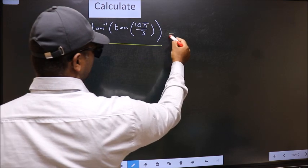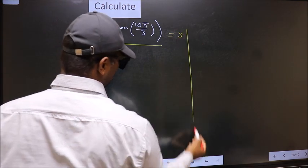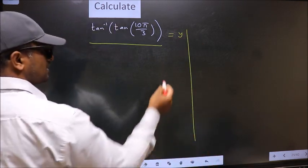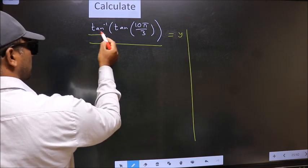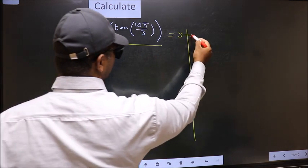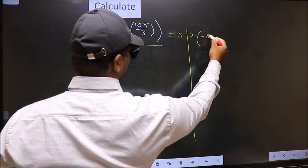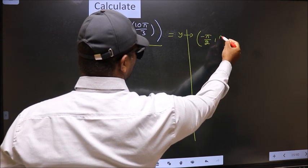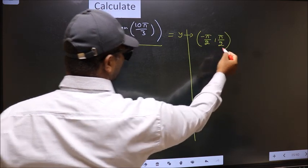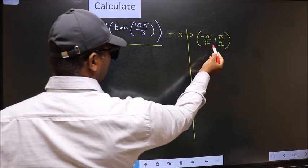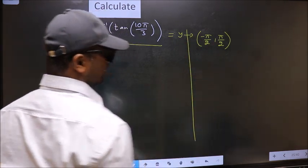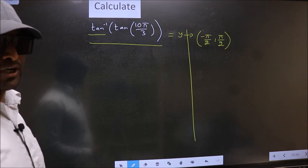So let us take the answer to be Y. And the condition is Y should lie in the range of tan inverse, which is minus π/2 to plus π/2. Our answer should lie in this interval. Clear with this point.